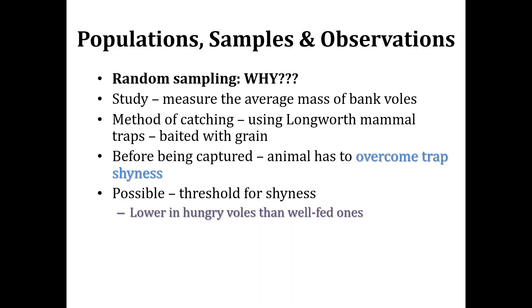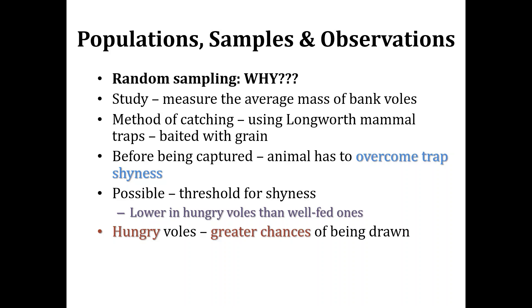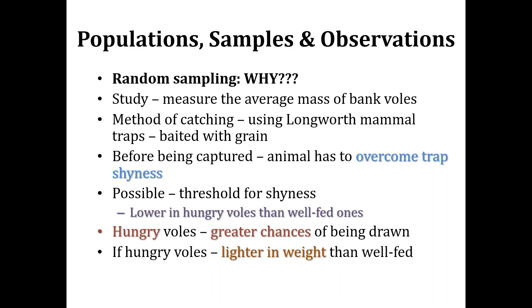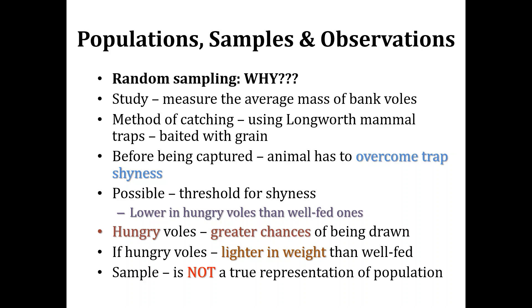This is a natural element of bias in such sampling. If hungry voles have a greater chance of being drawn and they are lighter in weight than well-fed ones, then there is an element of bias. The study is to measure the average mass of bank voles, but if the sample contains a large proportion of lighter, hungry voles, it will affect the observations. This sample is probably not a true representation of the population because of the bias present.